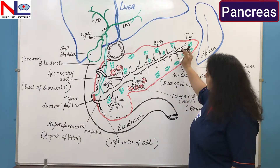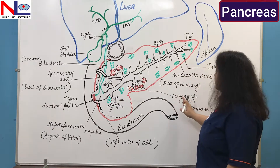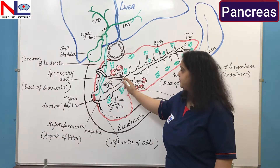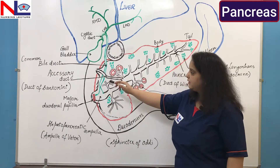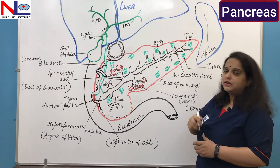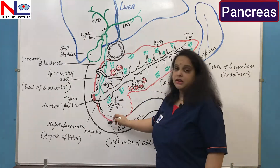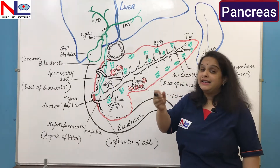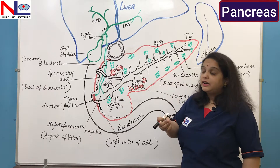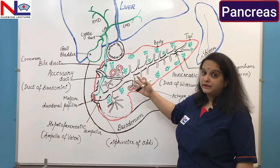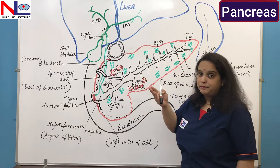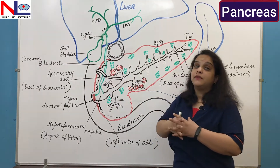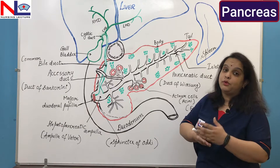The main pancreatic duct (duct of Wirsung) and the accessory duct both open into the duodenal part of the small intestine, because these ducts carry pancreatic juice — a secretion released from the pancreatic cells. The pancreatic juice releases directly onto the surface of the duodenum, mixes with food, and helps digest carbohydrates, proteins, and fats.